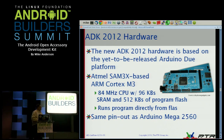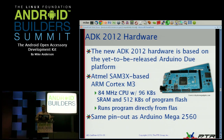With the 2012 hardware, they brought out a new board based on the Atmel SAM3X ARM Cortex-M3, running at 84 MHz, with 96 kilobytes of SRAM and 512KB of program flash. It's a much larger processor. This is the same pinout as the Arduino Mega, so all the shields that work on top of the Mega work on this as well.